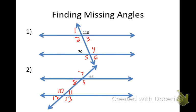I'm going to start off with angle one. Who can give me what angle one is and why? Why is angle one 70 degrees? I got a linear pair right here — supplementary angles — it's got to be 70 degrees.